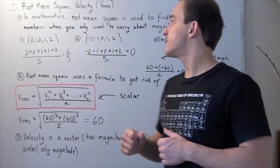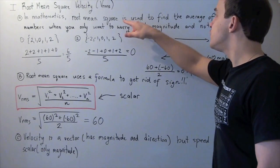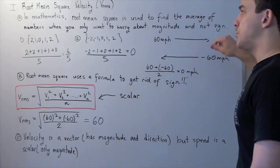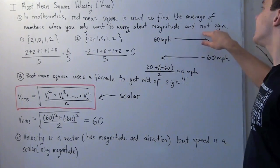In mathematics, and specifically statistics, root mean square of any set of values is used to find the average of numbers when you only want to worry about the magnitude and not the sign.